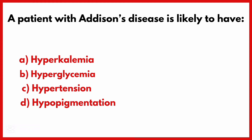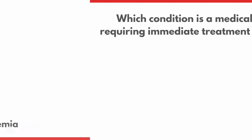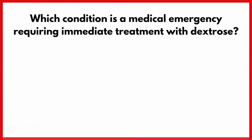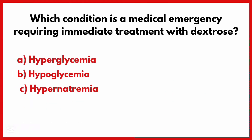A patient with Addison's disease is likely to have — the correct answer is option A: Hyperkalemia.